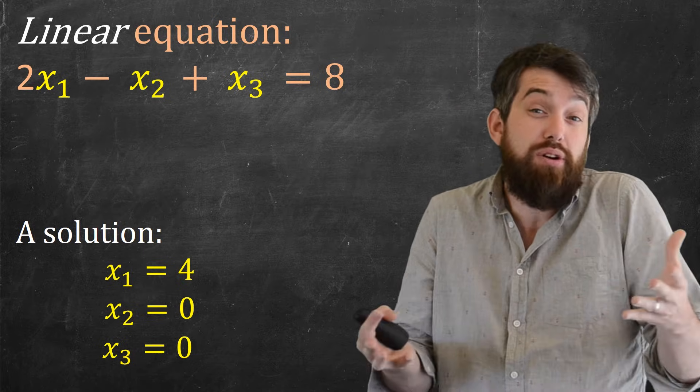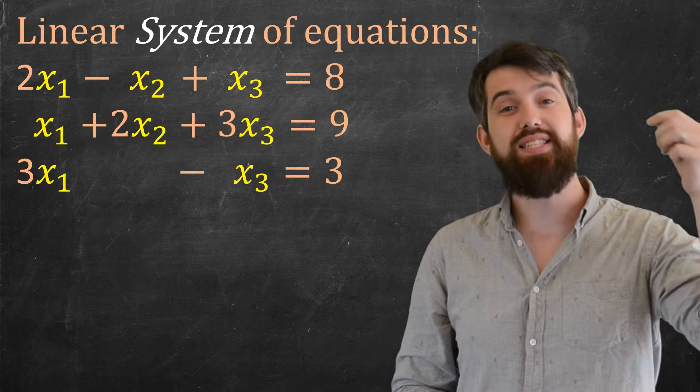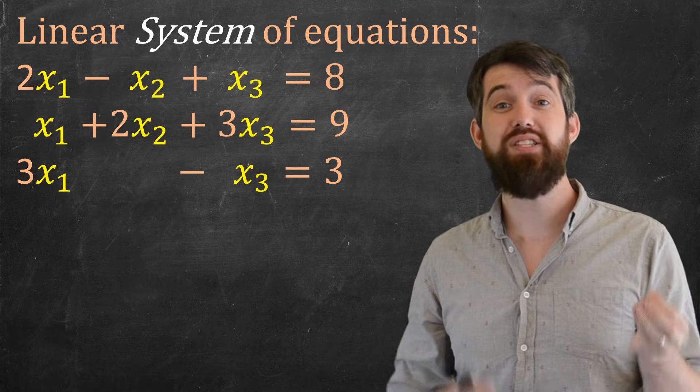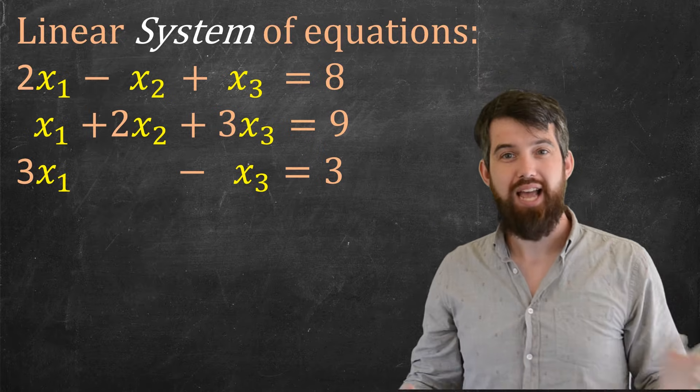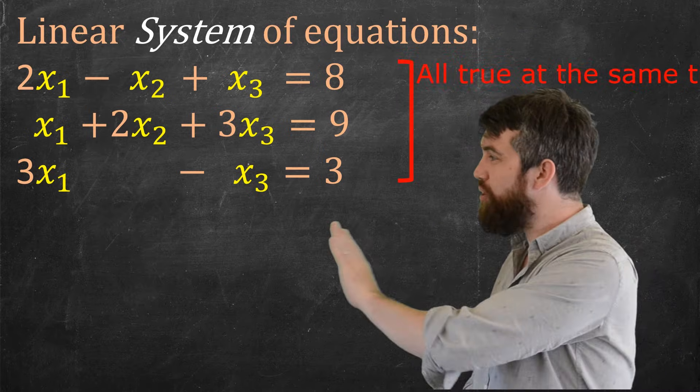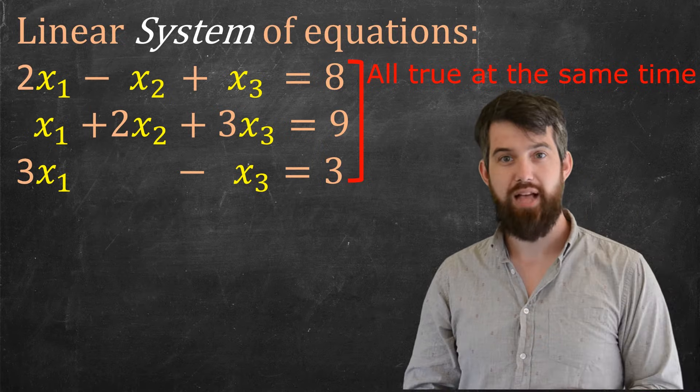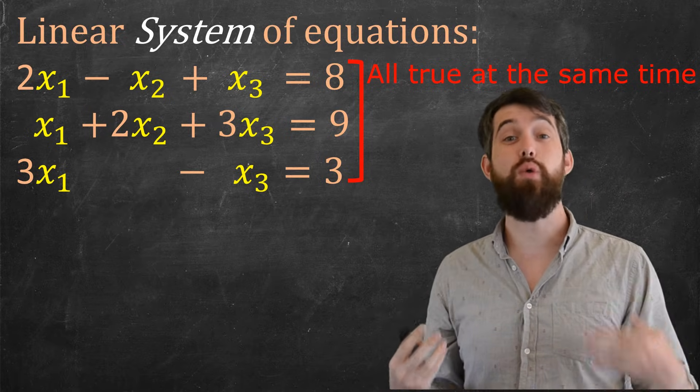Okay, so that was linear equations, which is nice, but now let's upgrade. Let's look at linear systems of equations. And in a linear system of equations, what we're going to have is multiple lines of linear equations. And the key point is that all of these equations that I have, they're true at the same time. A solution to the system of all three equations must solve each equation individually.